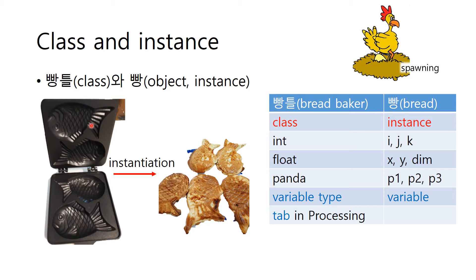Class is a machine to make bread. This is a bread baker, and this is a bread. If the class is called bread making machine, the bread that comes out of that machine is called object. When we say float x, y, float is variable type and x, y are variables. You can say float is a class and x, y the objects.